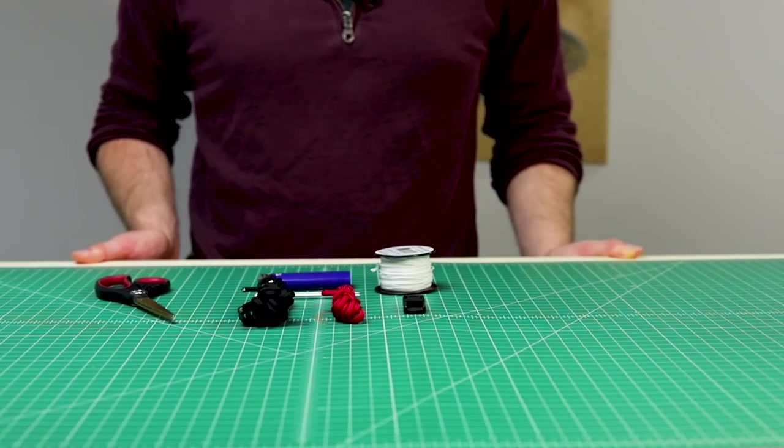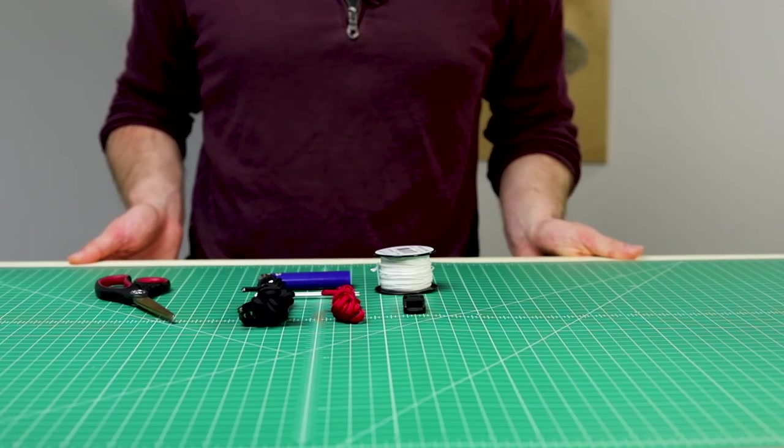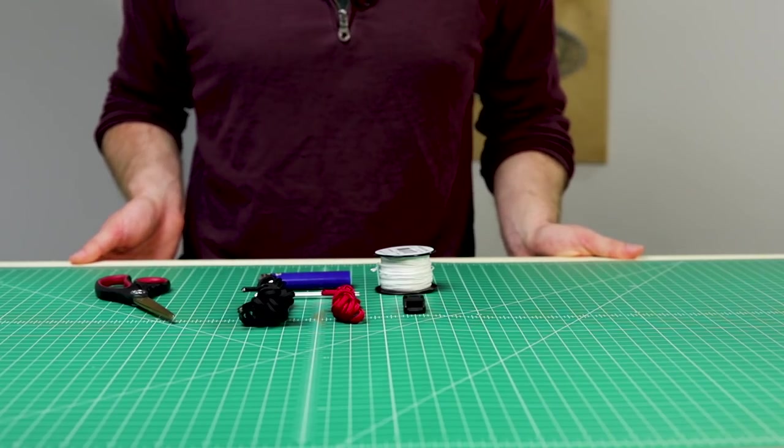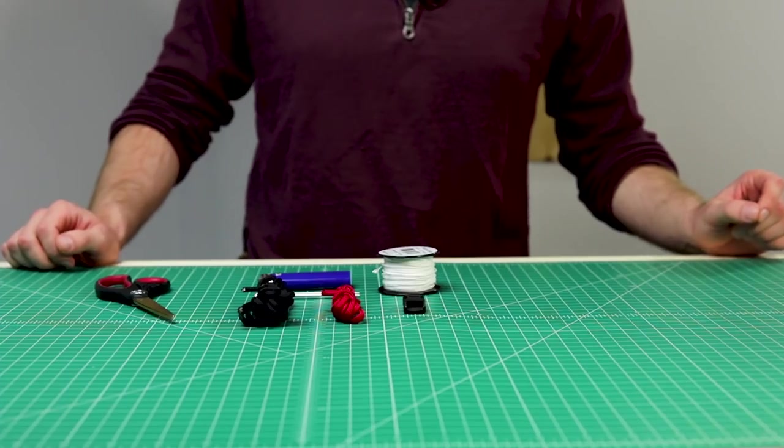Hey guys, welcome back to Paracord Planet. Today we're going to be making a half-stitched Solomon's Dragon bracelet in the style of House Targaryen from Game of Thrones.